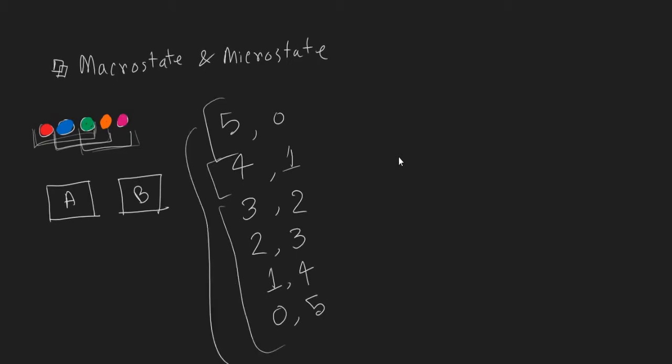These distributions are called the macrostate. These 6 distributions are called the macrostate.